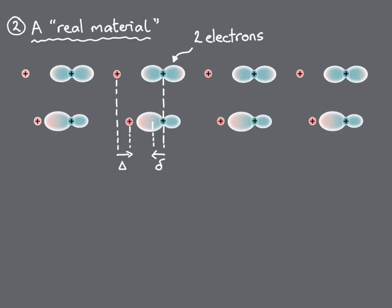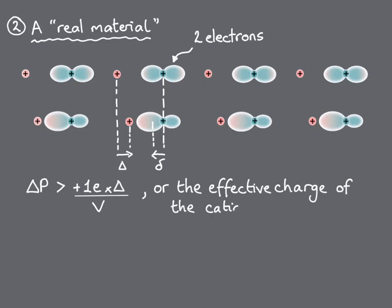Now, since the positive cation is shifting to the right and the negative electrons are shifting to the left, the change in polarization is greater than the plus one times delta of the perfectly ionic case. And we say that the cation has an effective charge, in the sense of the amount that it contributes to the polarization by its displacement, that is greater than one.